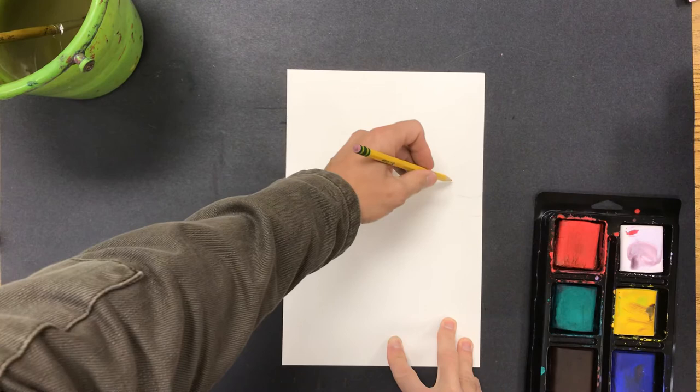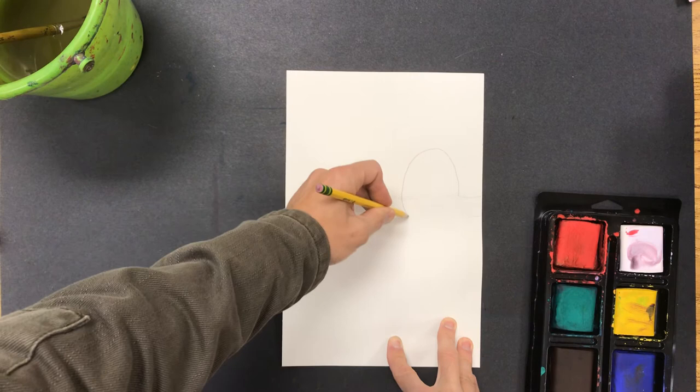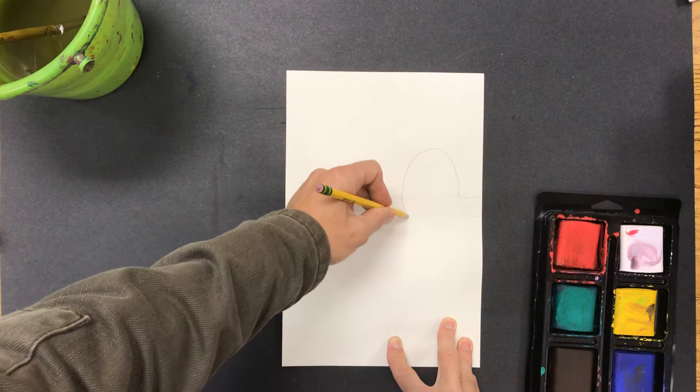What I'm going to do next is I'm going to go ahead and I'm going to put how I want my eyes to look on here. So I'm going to use kind of these large oval shapes.